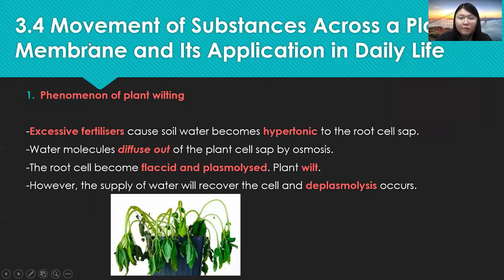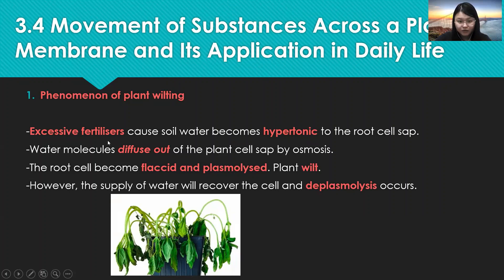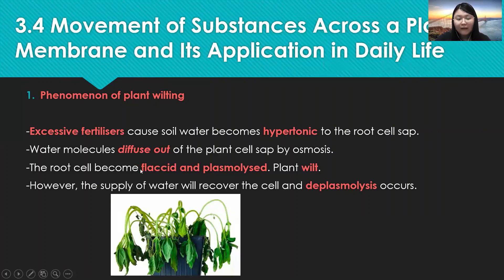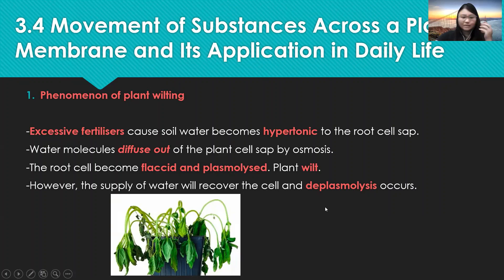Lastly, Section 3.4: Movement of substances across the plasma membrane and its application in daily life. The first phenomenon is plant wilting. Excessive fertilizer will cause soil water to become hypertonic to the root cells. Water molecules will diffuse out of the plant cells by osmosis, causing the root cells to become flaccid and plasmolyzed, and the plant will wilt due to lack of water. However, if water is supplied immediately, the cells will recover and deplasmolysis will occur.